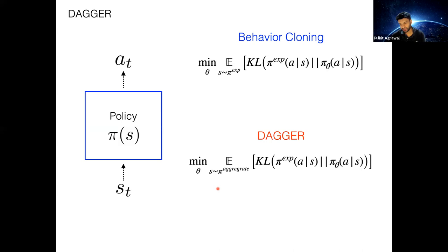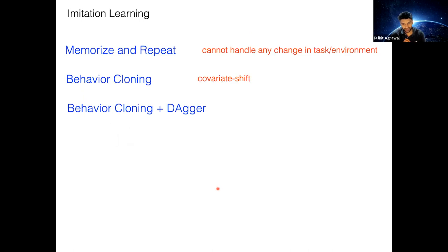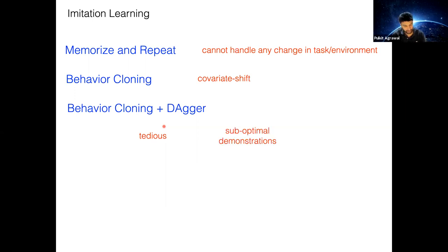So behavior cloning plus DAgger overcomes the problem of covariate shift, but there are still problems remaining. For example, collecting demonstrations is quite tedious — moving the robot around is not fun and can be costly. Many times demonstrations are suboptimal, and at the end of the day we are still learning policies that can only perform one particular task. Any questions on DAgger?